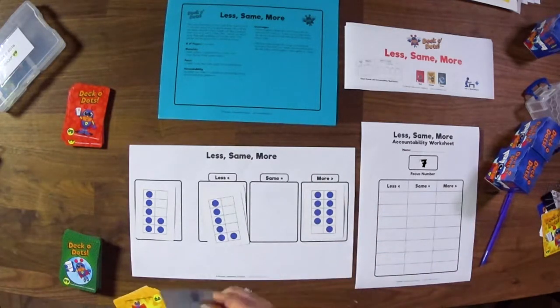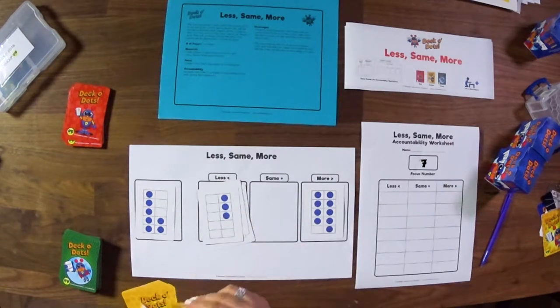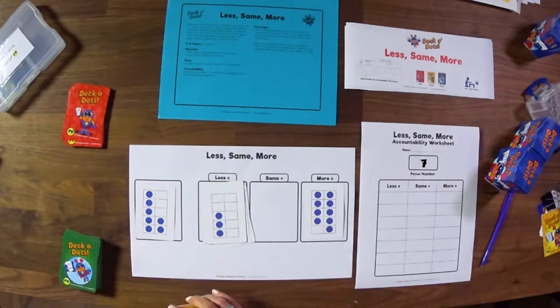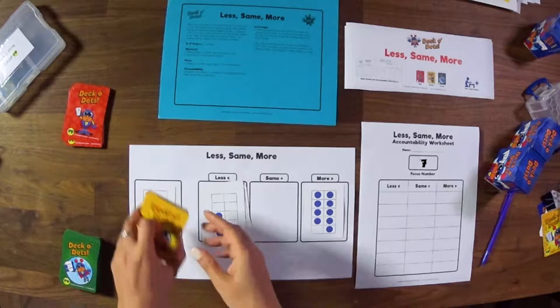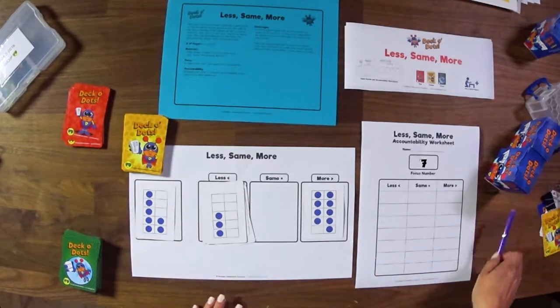As I keep flipping, I have a 9 that is more. If the kids ever come up to a 7, they're going to put that right in the category of same. When you want the kids to record or to be able to show with accountability, you can just have them put which numbers they're coming up with.